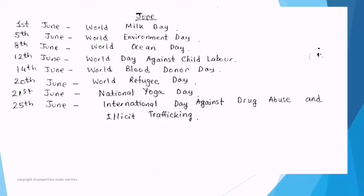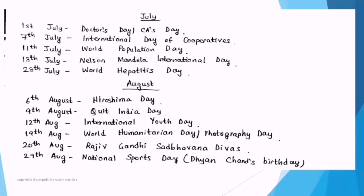June important dates: 1st June — World Milk Day. 5th June — World Environment Day. 8th June — World Ocean Day. 12th June — World Day Against Child Labour. 14th June — World Blood Donor Day. 20th June — World Refugee Day. 21st June — International Yoga Day (share its theme in the comments). 25th June — International Day Against Drug Abuse and Illicit Trafficking.